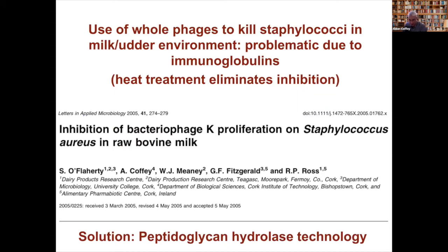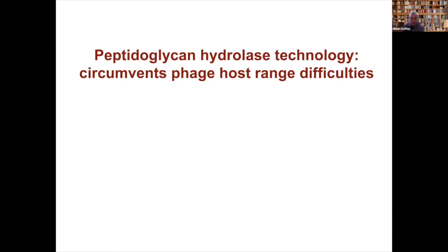You can also have problems where you're trying to apply phages — there can be environmental parameters that inhibit their activity. As we found when trying to use a Staphylococcus phage against Staphylococcus in raw milk, there are immunoglobulins present which compromise the interaction between the phages and their hosts. This brings us to using peptidoglycan hydrolase enzymes, which circumvents a lot of these host range difficulties.